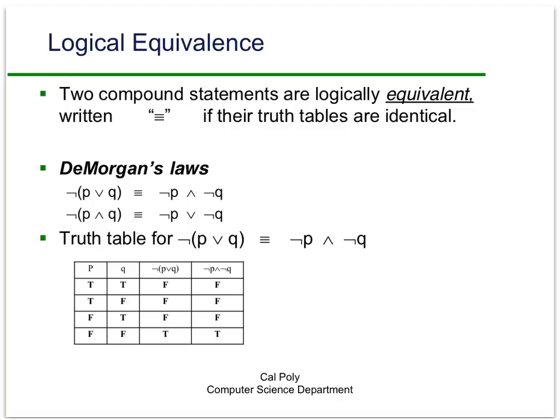The first De Morgan's Law says: if you take the negation of a disjunction, that's logically equivalent to the negation of the first logical variable in conjunction with the negation of the second logical variable. In other words, as we take the NOT sign inside the parentheses, it changes the sense of the conjunction or the disjunction.